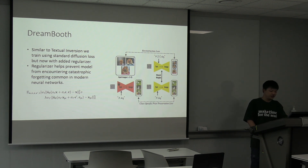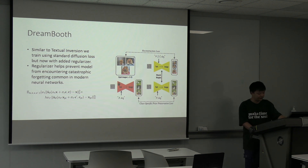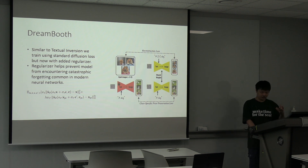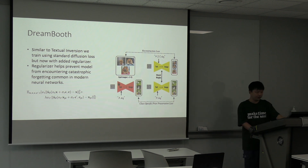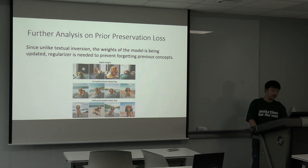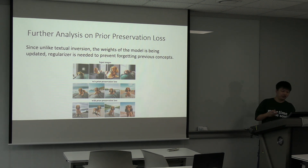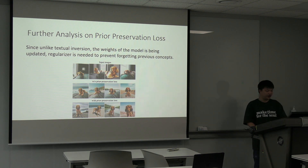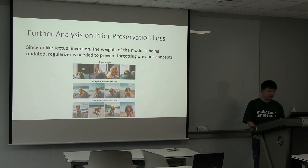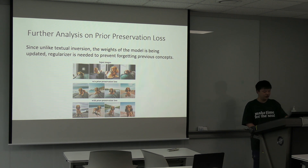This regularizer addresses the problem that since the weights are now changing, the models tend to forget previous concepts — this is called catastrophic forgetting. The regularizer term is essentially used to help prevent this problem. This is a slight analysis of the prior preservation loss, which is the regularizer term. As can be seen, without this prior preservation loss, concepts like the beach are forgotten. But with this prior preservation loss, we can generate good images of beaches without losing or forgetting them.